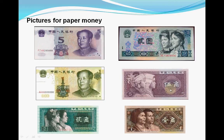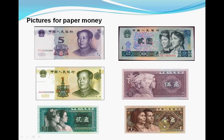This is the 5 jiao. You can say wǔ jiǎo or wǔ máo. This is the 2 jiao. You can say liǎng jiǎo or liǎng máo. This is 1 jiao. You can say yī jiǎo or yī máo.